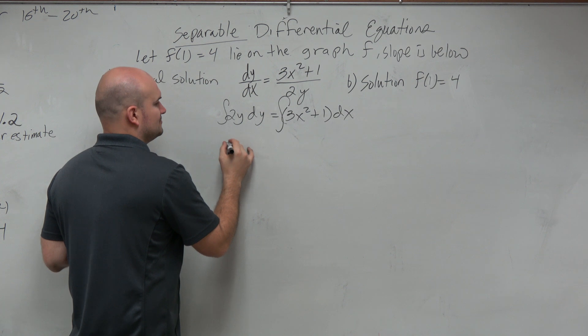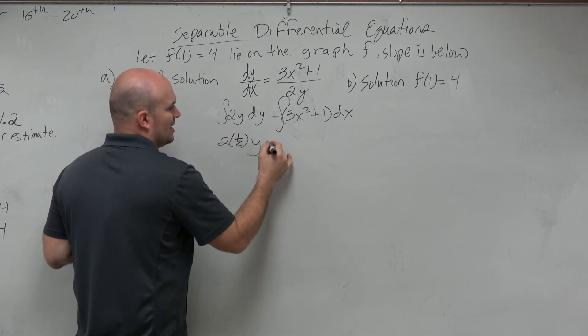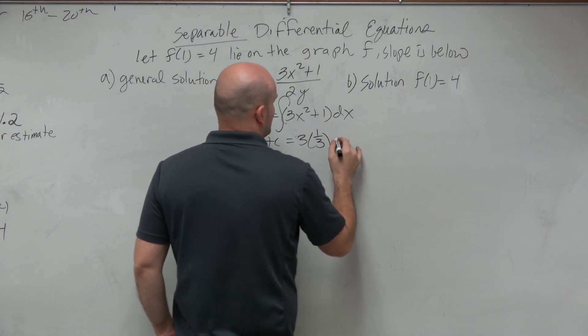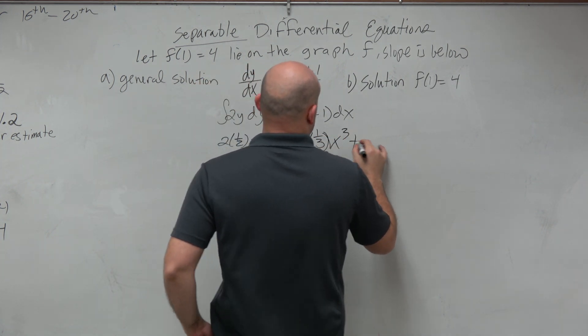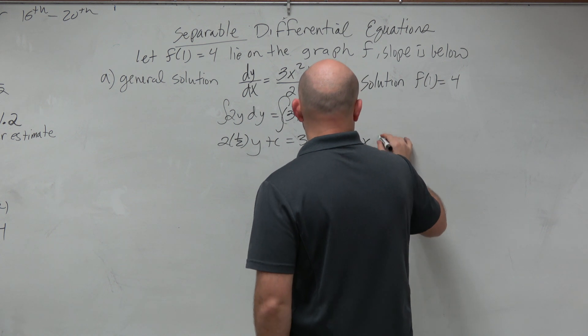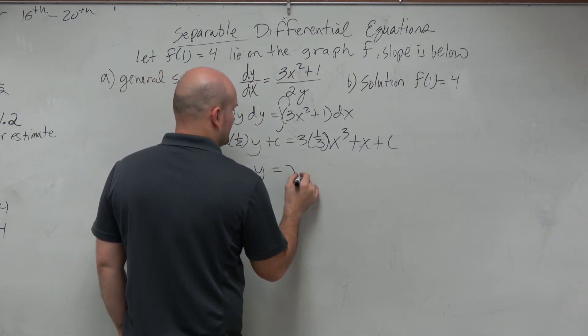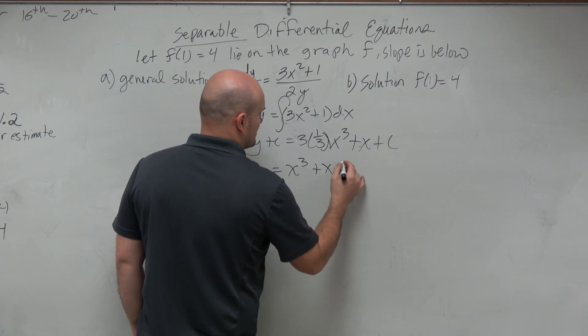2 times 1/2 times y plus c equals 3 times 1/3 x cubed plus x plus c. Now, I can go ahead and simplify it. y equals x cubed plus x plus c.